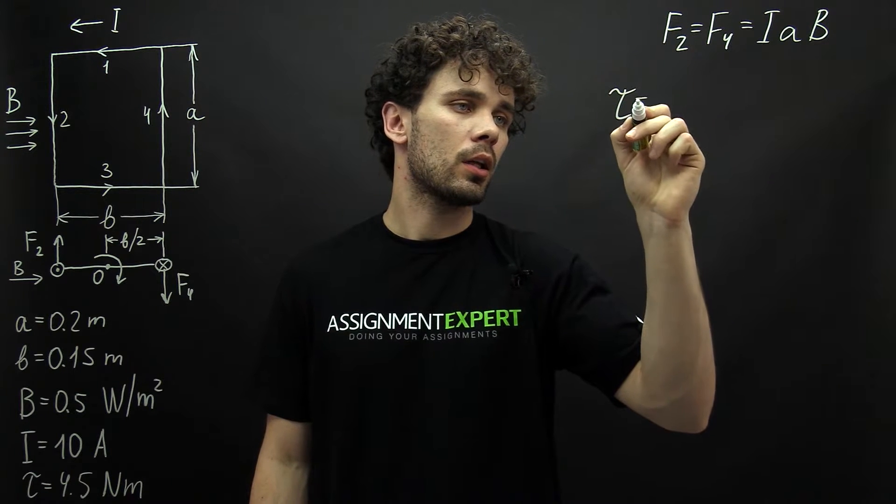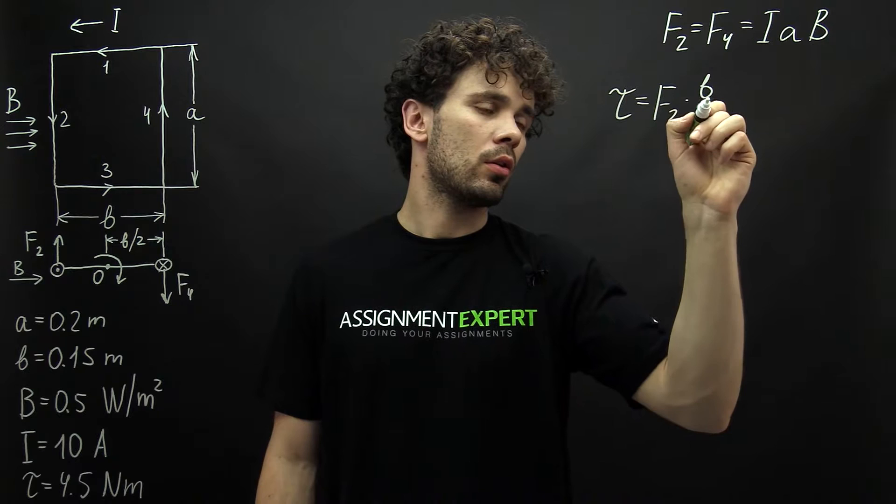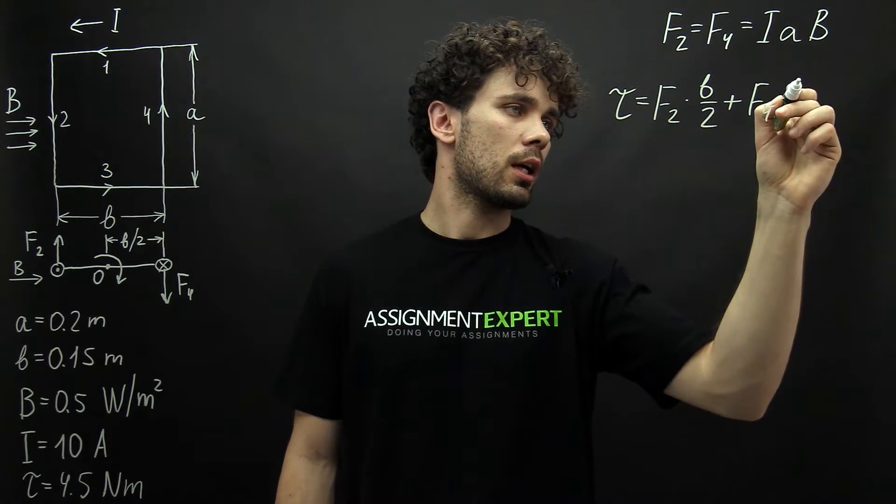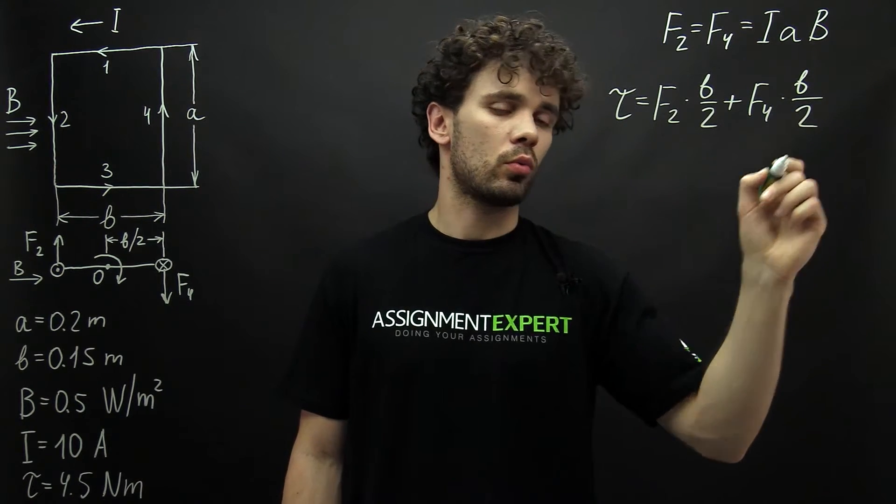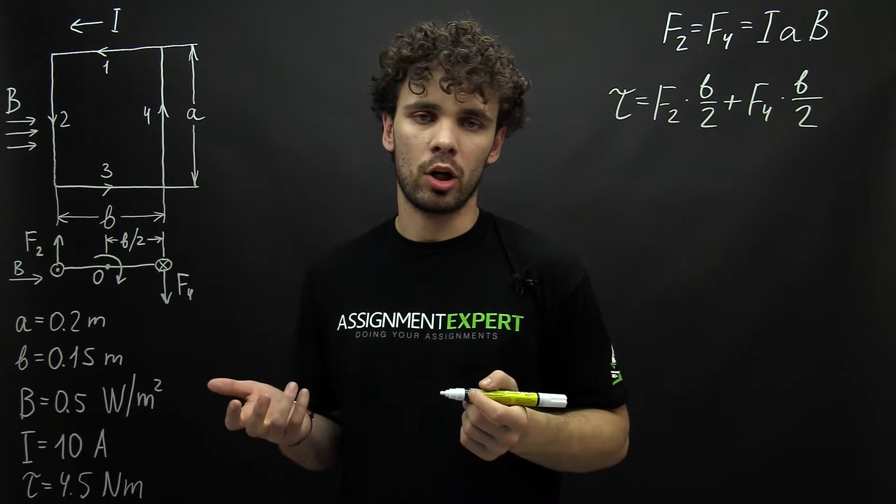TAU equals F2 times B over 2 plus F4 times B over 2. Here B over 2 is half of this side and this is the moment arm.